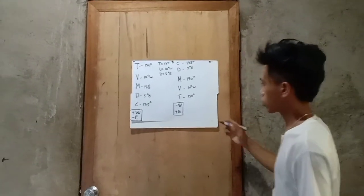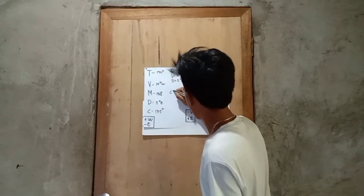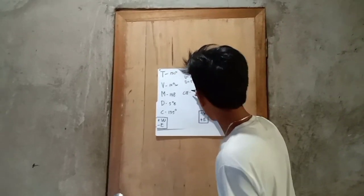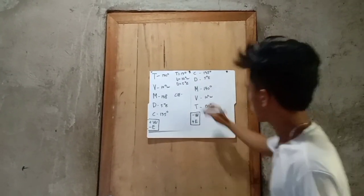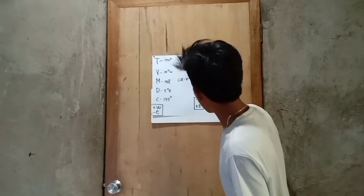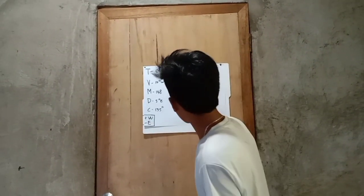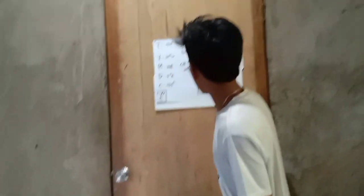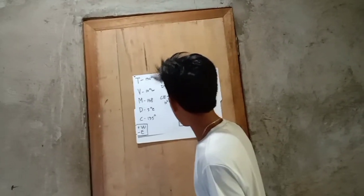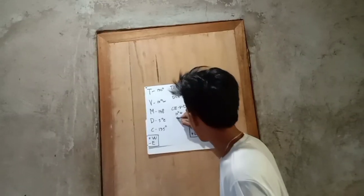So, to get the compass error, we must subtract deviation by variation. So, the variation is 10 degrees, and the deviation is 5 degrees.